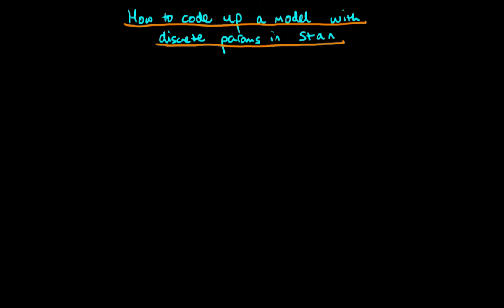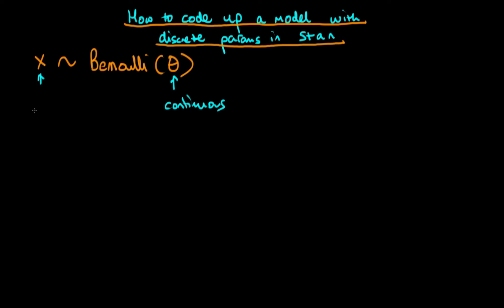In this video I want to explain how, even though Stan doesn't directly allow us to specify models which have discrete parameters, we can nonetheless use Stan to sample from such models. For clarity, Stan allows us to specify models like the following: suppose that we have some data x that comes from a Bernoulli distribution with a parameter theta. Here our parameter theta is a continuous parameter, whereas our data x is going to be a binary discrete parameter. This sort of model is absolutely fine in Stan.